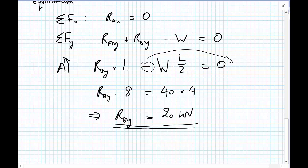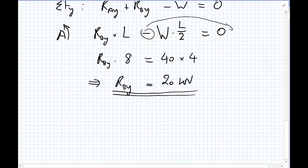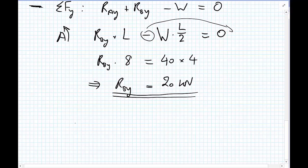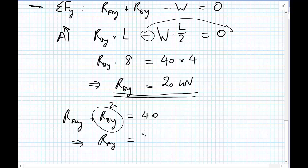And finally, just to complete the problem, I'll do, from our sum of the forces in the Y direction equation, I'll get the, so RAY plus RBY must be equal to 40, and I'll know that RBY was 20 from above. And that gets me that RAY equals 20 kilonewtons.